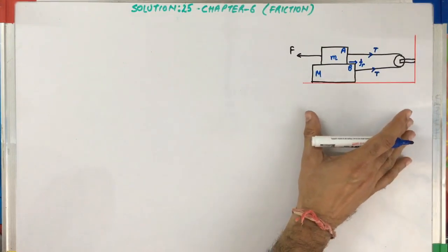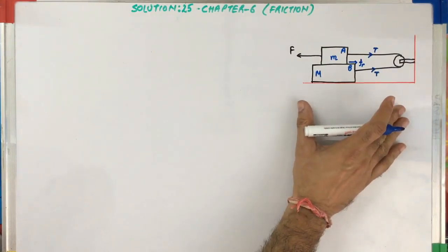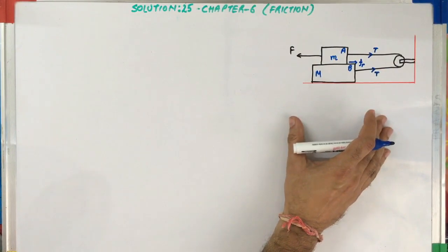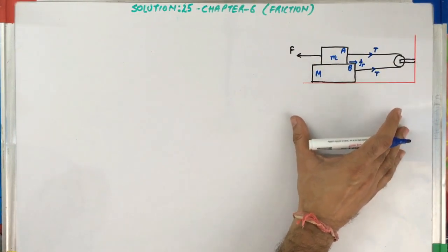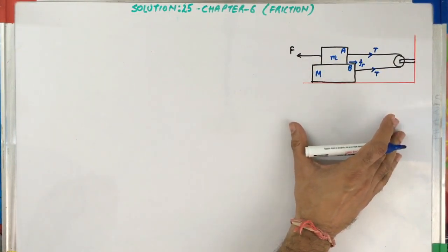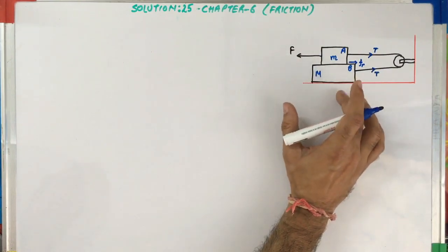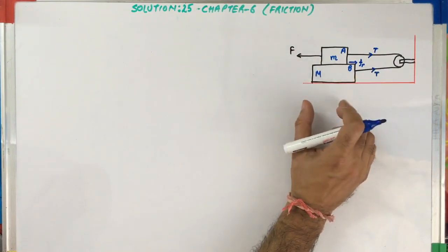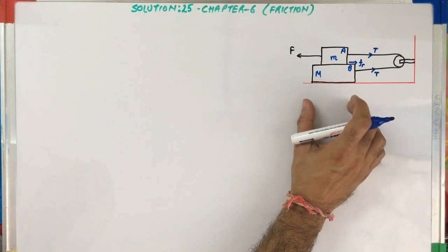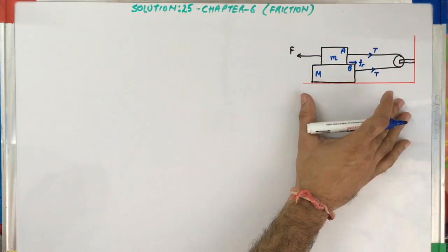In this case, the same system is kept in an elevator and the elevator is coming down with an acceleration a. In that scenario, the only impact of the elevator is on the vertical forces acting on these blocks. There will be no impact on the horizontal forces. So let's figure out what forces are acting in the vertical direction.